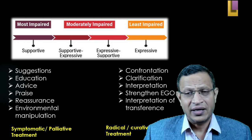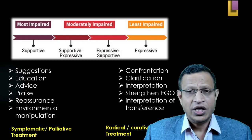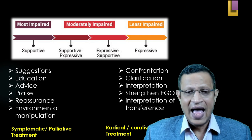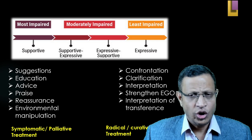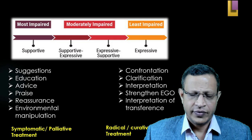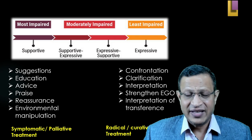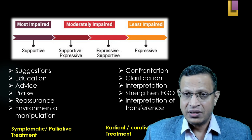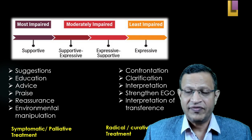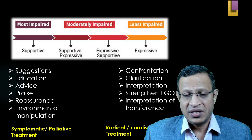On the supportive end where the patient is most impaired, techniques include: suggestion, education, advice, praise, reassurance, environmental manipulation, and self-esteem enhancement — that is, symptomatic or palliative therapy. On the other end, where psychic operators are strong, confrontation, clarification, interpretation, strengthening of the ego, and interpretation of transference are done to achieve radical or curative treatment so that the patient does not relapse.